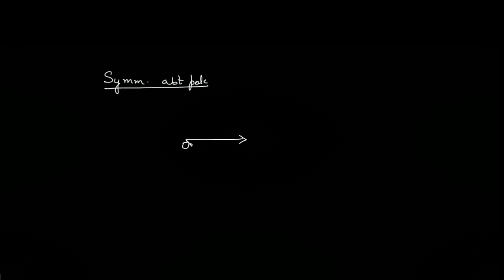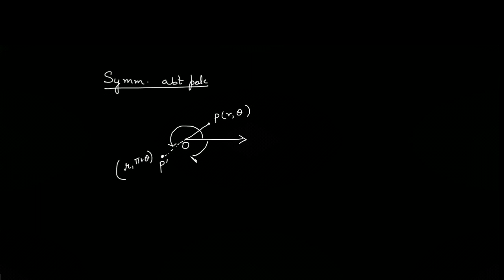Similarly, we will check the symmetry about the pole. Symmetry about the pole means: this is our pole, this is any point P lying on the graph. If corresponding to P, point P' also satisfies the graph, then our graph is symmetrical about the pole. The coordinates of P': you can move angle pi plus theta and cover distance r to reach P'. Similarly, you can move angle −(π − θ) and cover distance r.